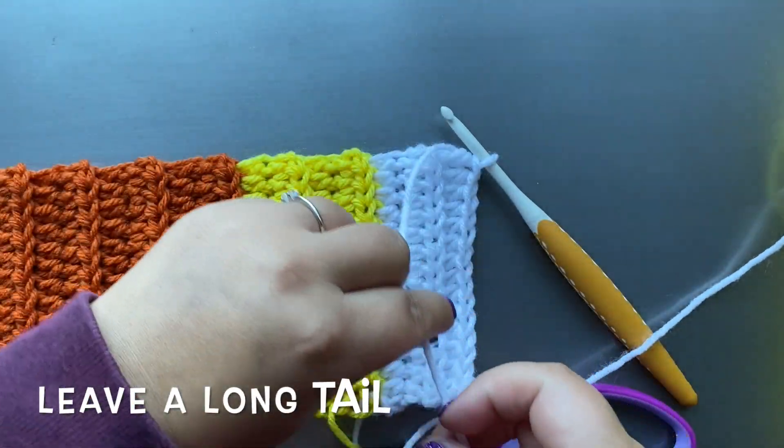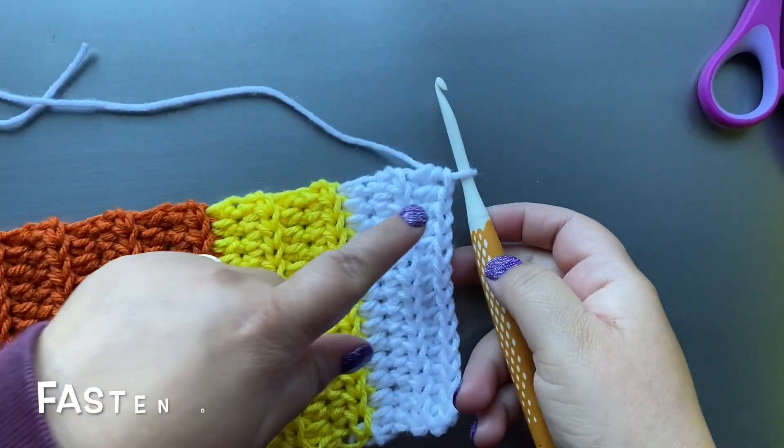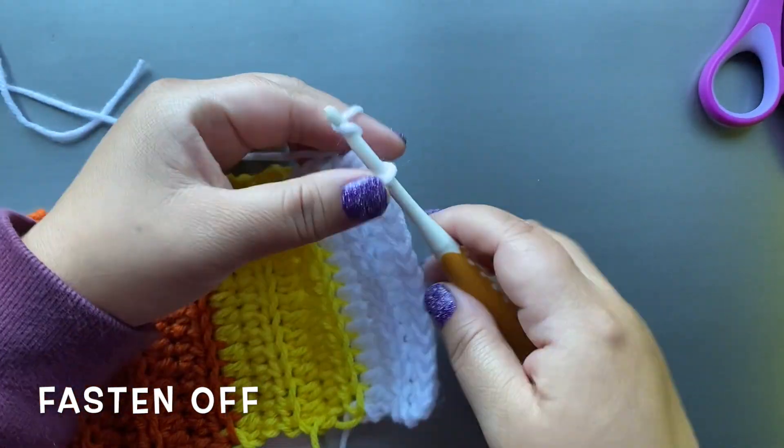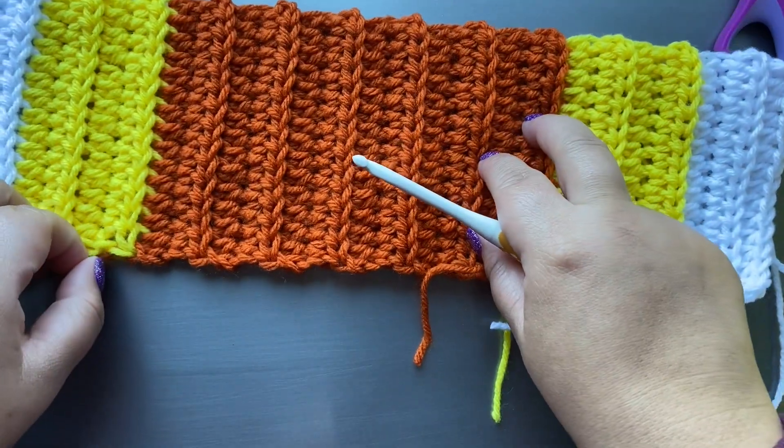Once you're done crocheting your headband, cut a long tail. Fasten your headband off and weave in those ends.